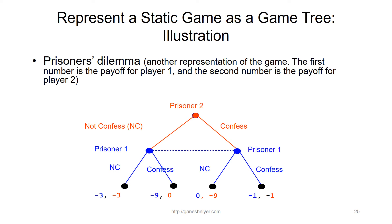We can also represent a static game as a game tree. This is useful when a game involves some steps that are simultaneous and some that are sequential. A tree can represent both types of information: a dotted line between nodes represents that a player does not know which of the two nodes they are in — they know the other player's selection is over but don't know what it was. This is one way of representing a static game as a game tree.